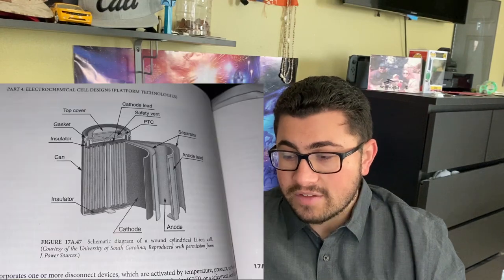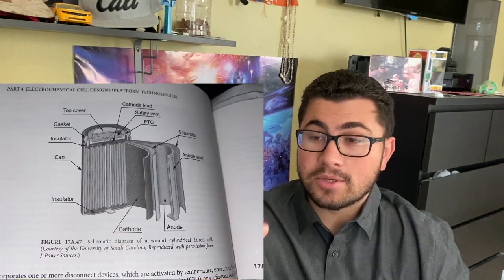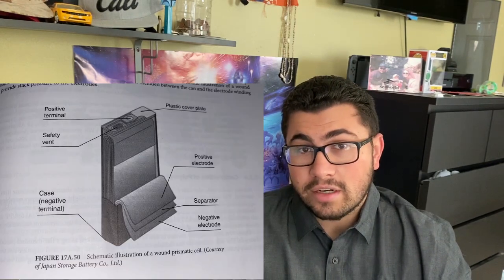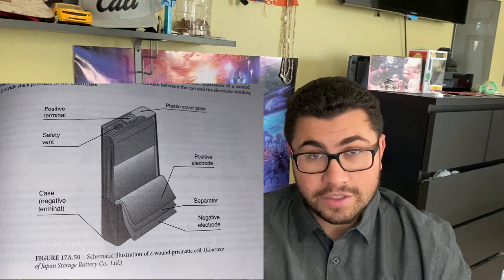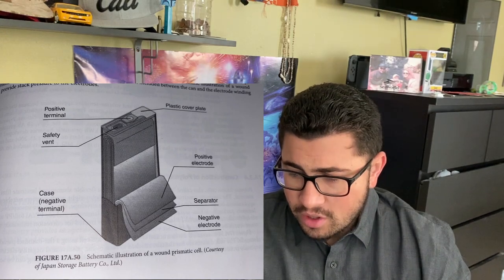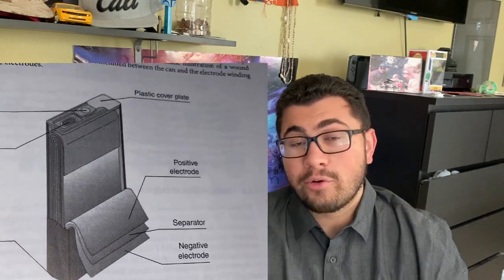There are different types of cells when it comes to batteries. An example of a cell type is the cylindrical cell — this right here is a cylindrical cell, you can tell because it's a cylinder. There are also prismatic cells, which are often used in electric vehicles, and those can either be wound or stacked.